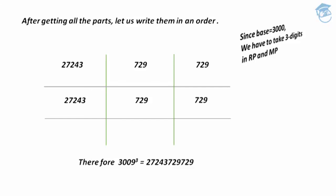This is how we use the Avadunam Sutra to find the cube of a given four-digit number near bases like 2000, 3000, 4000, and so on. I hope you've understood how to use this sutra. In the next session, we will have more examples on the same concept. Thank you for watching, have a nice day.